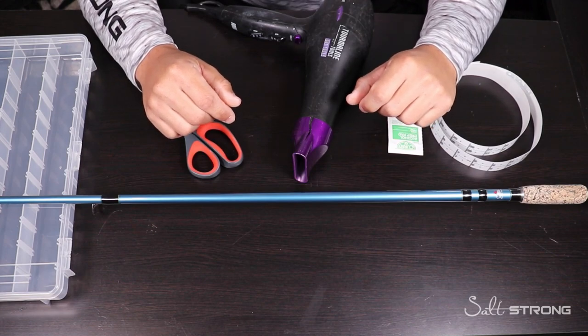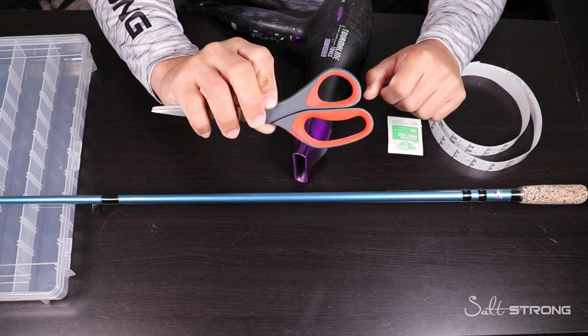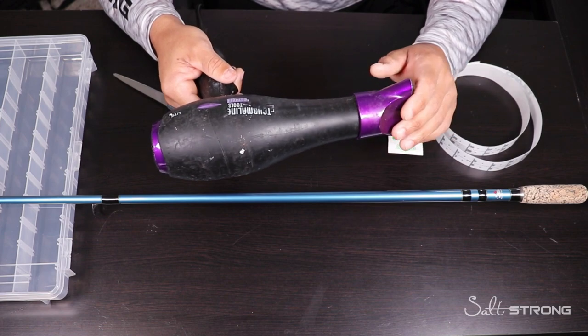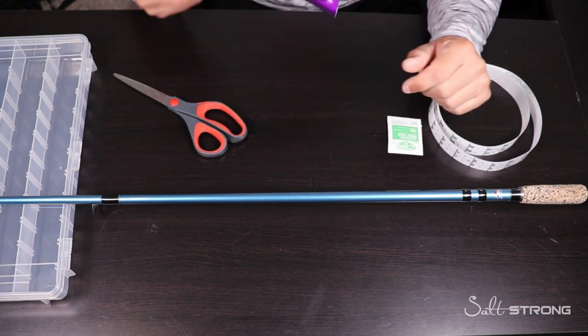So in order to do this properly there are a couple extra things you're going to need. Number one being a pair of scissors so that you can cut the tape, and then also a blow dryer which you're going to use to heat up the decal so that it adheres properly to the rod.